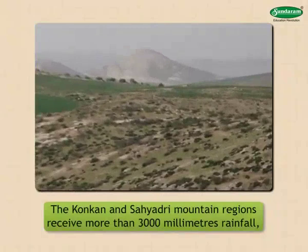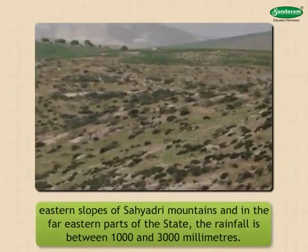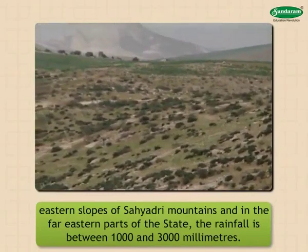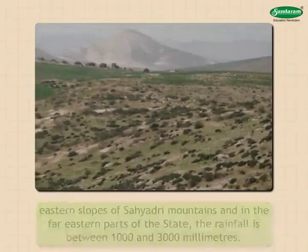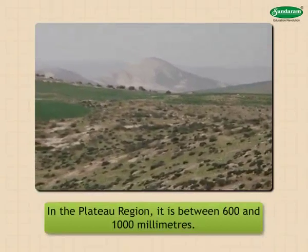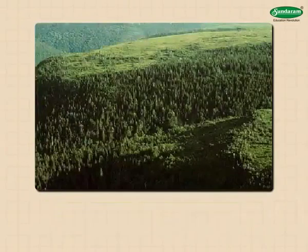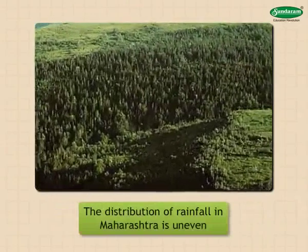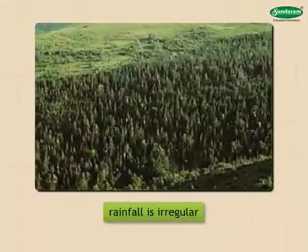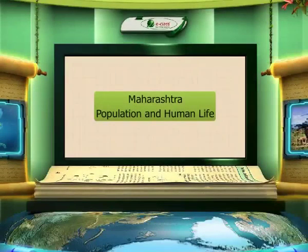While blowing further east, these winds move away from the Sahyadri mountains and beyond the rain shadow effect. As a result, rainfall increases in the eastern parts of the state. The Konkan and Sahyadri mountain regions receive more than 3000 mm of rainfall. Along the eastern slopes of the Sahyadri mountains and in the far eastern parts of the state, the rainfall is between 1000 and 3000 mm. In the plateau region it is between 600 and 1000 mm, and in the rain shadow area it is less than 600 mm.